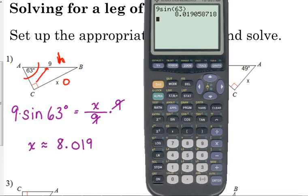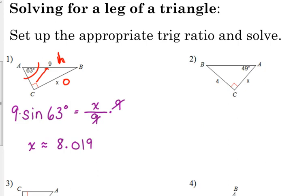And that tells us that our leg X is approximately 8.019. We don't have units, so we just leave it. Now, something you can do to check and make sure. We have the hypotenuse. We just solved for a leg. Make sure that the number you get is less than the hypotenuse. The hypotenuse is nine. Our leg is 8.019. Now, that doesn't guarantee that you did it 100% correct, but that's one mistake that you've avoided. Your leg is shorter than your hypotenuse.